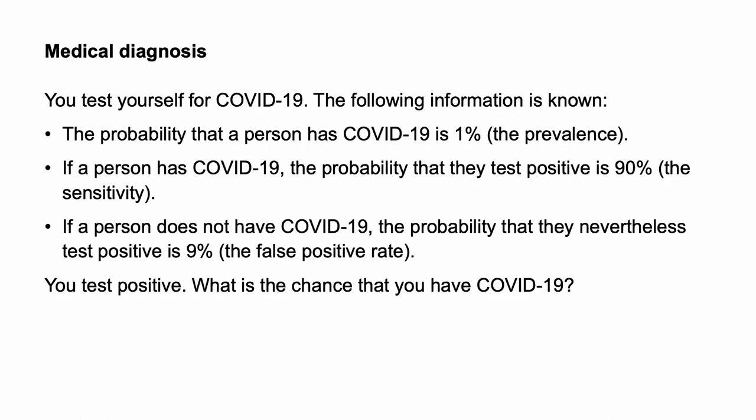We can also see base rate neglect in the context of diagnosing a rare disease. Consider the following problem. You test yourself for COVID-19. The following information is known: the probability that a person has COVID-19 is 1%, the prevalence. If a person has COVID-19, the probability that they test positive is 90%, the sensitivity. If a person does not have COVID-19, the probability that they nevertheless test positive is 9%, the false positive rate. You test positive. What is the chance that you have COVID-19?